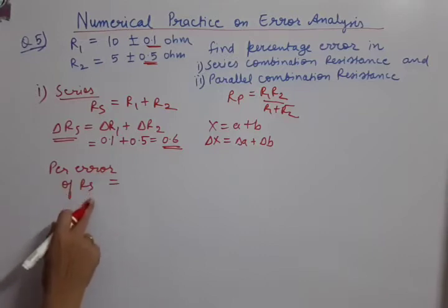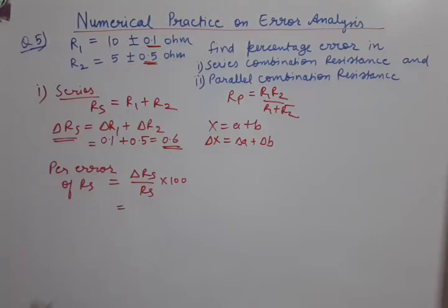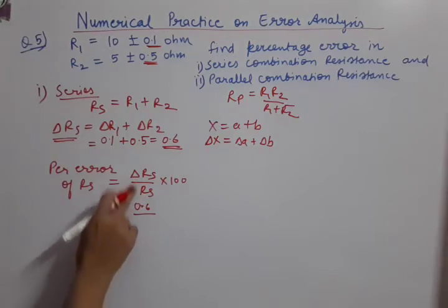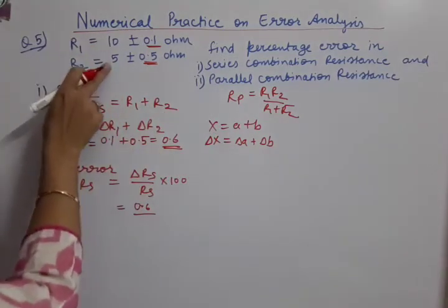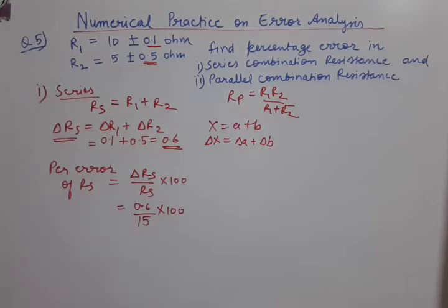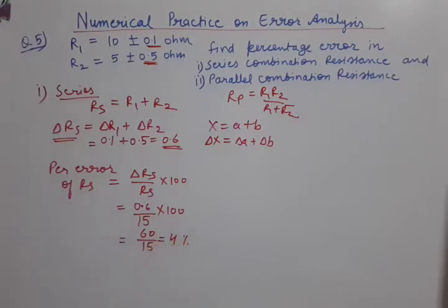So let us make the percentage error formula of Rs. Percentage error of Rs formula. How to make percentage error means delta Rs upon Rs into 100. Now, delta Rs is 0.6, it is just now obtained. Now what about Rs? This is Rs original. Upon me jo hota hai, vho original hota hai. Original value. So Rs formula, we have to see R1 plus R2. What is R1? 10. What is R2? 5. 10 plus 5? 15. Into 100. This way, I will get percentage error. Let us solve the value now. 0.6 into 100 is 60 upon 15. So final answer is 4%. So students, please note down this solution of series.